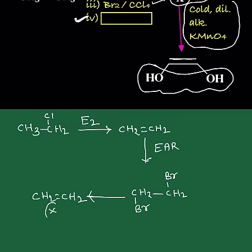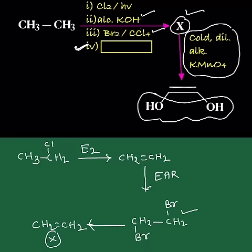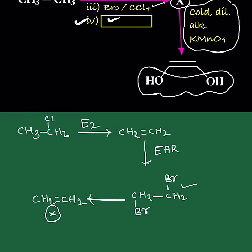That means X is obtained from 1,2 dibromo ethane by using a suitable reagent in an empty box provided at the fourth place. That is definitely dehalogenation.